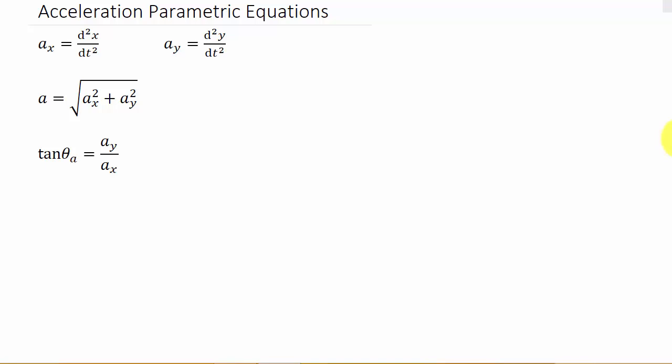This video, let's look at finding the acceleration and direction with parametric equations. The acceleration is equal to the square root of a_x squared plus a_y squared, and the direction angle is tangent θ_a equals a_y over a_x.